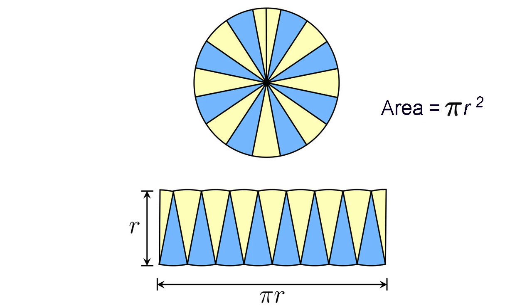We expect pi to turn up whenever circles are involved because its geometric roots lie in this shape. But the great wonder of pi is its habit of materializing, as if by magic, even when there's no circle in sight. For instance,